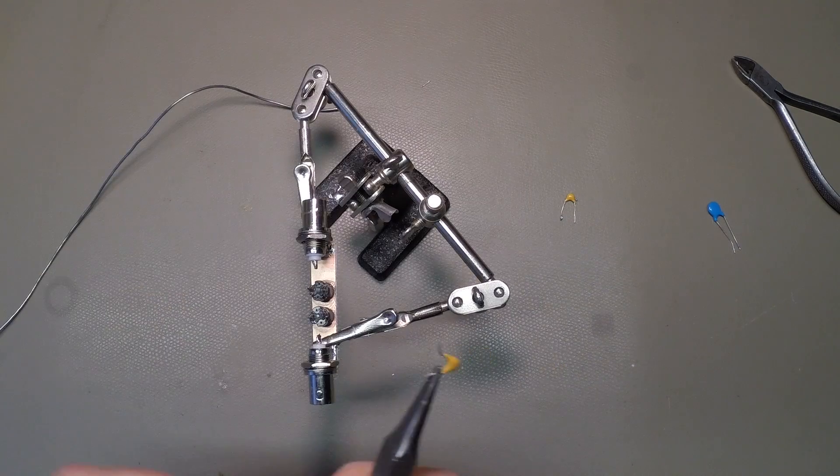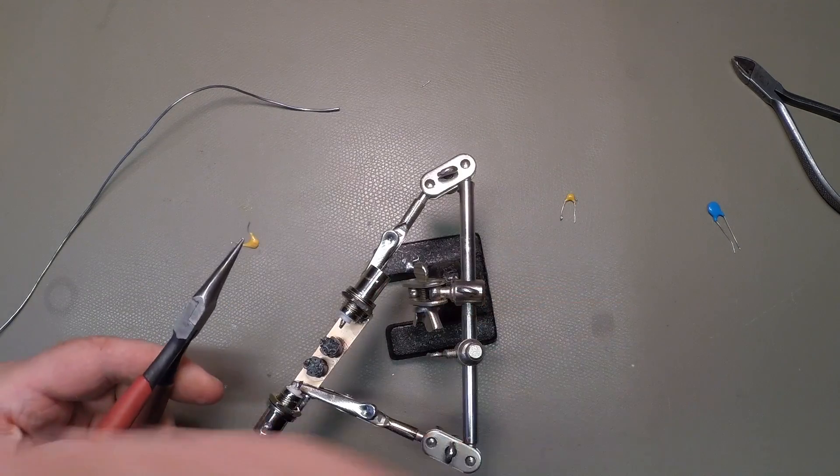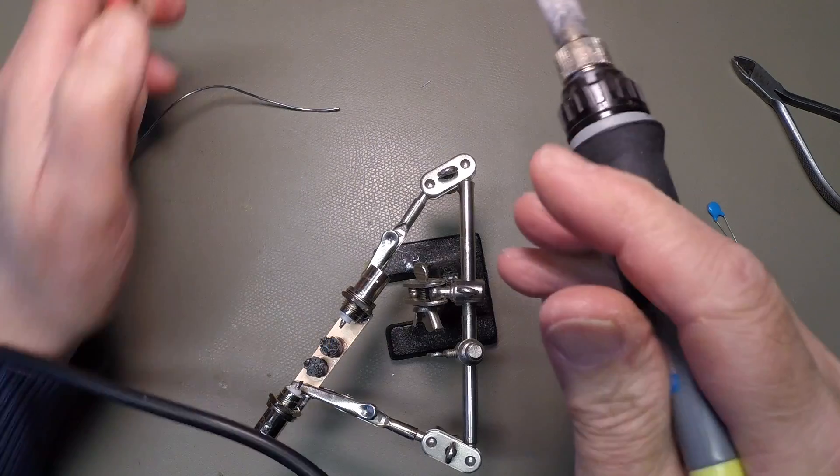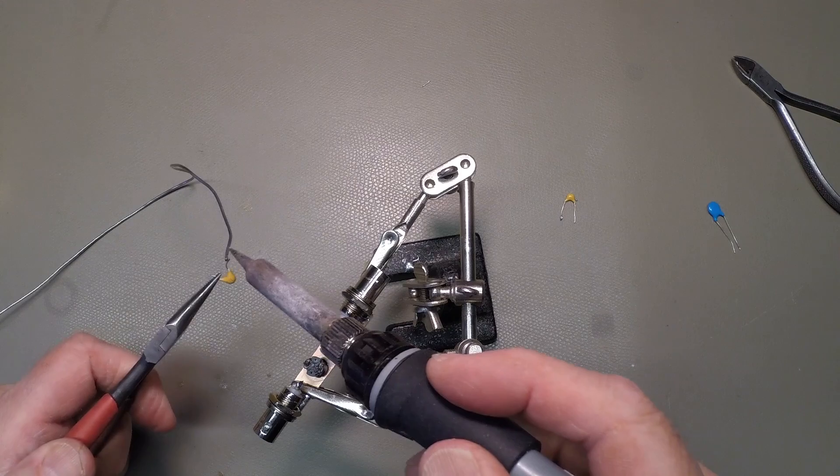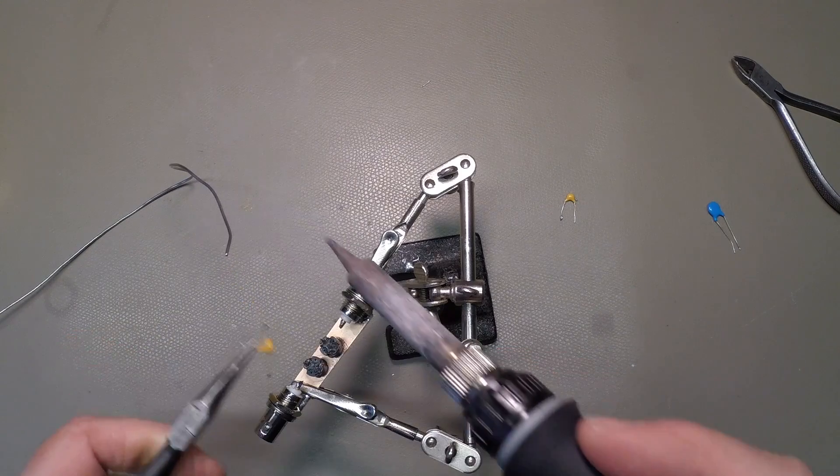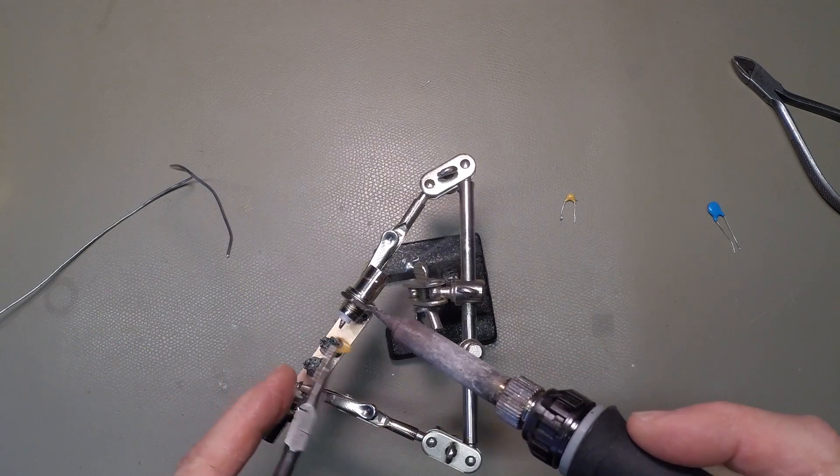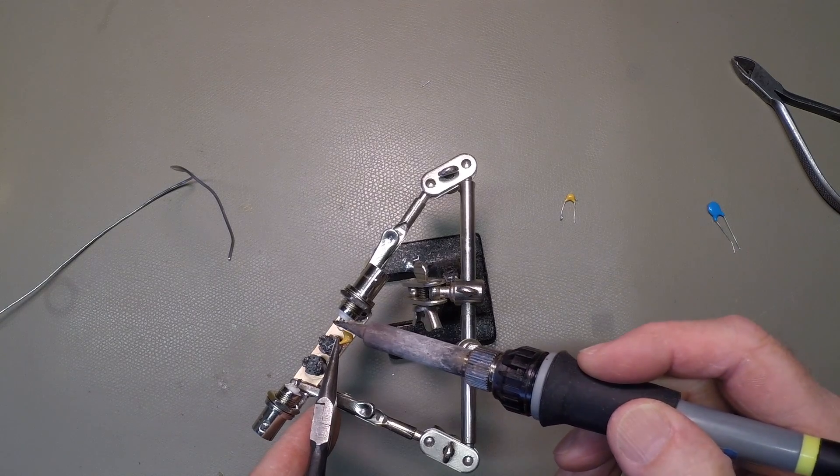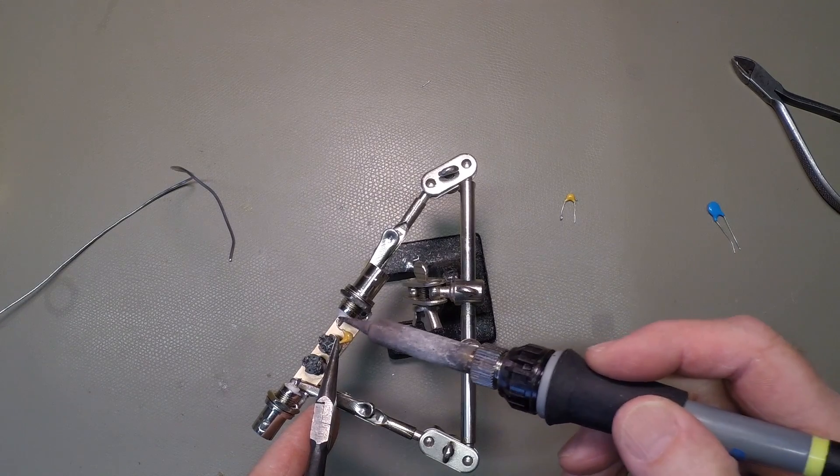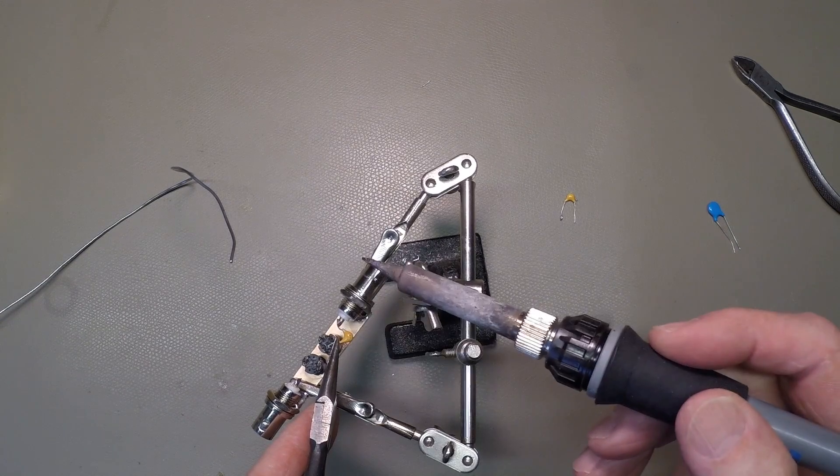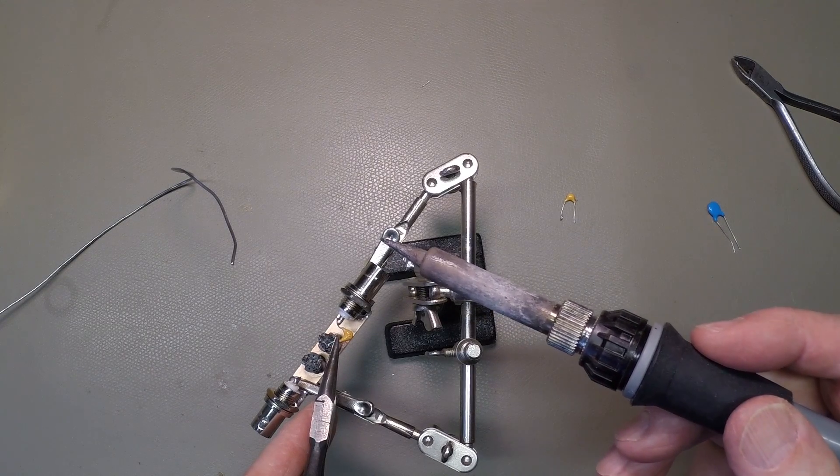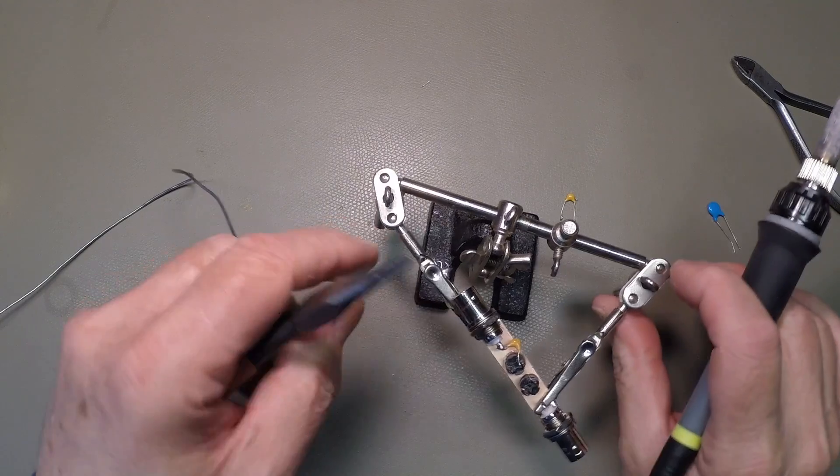Start with the element that's going to give you greater support. Tin the lead of the component. And solder this to the hot terminal of the BNC connector. Okay. Connection number one.